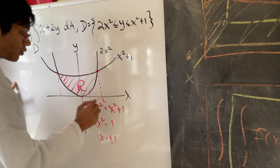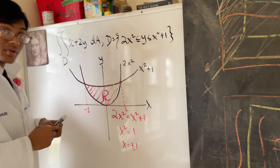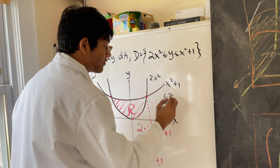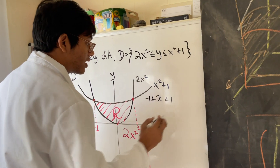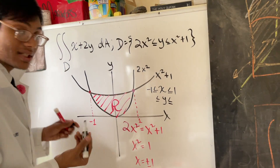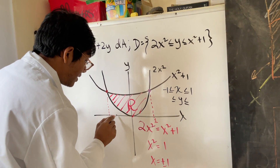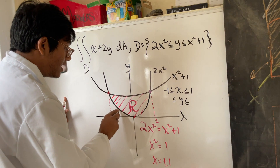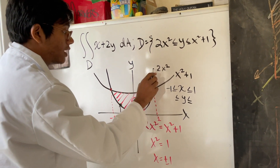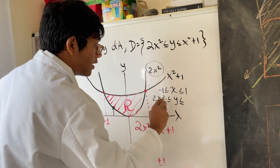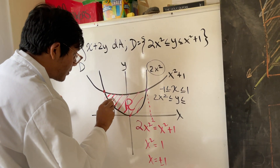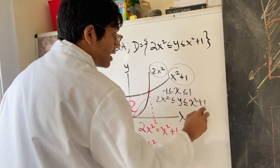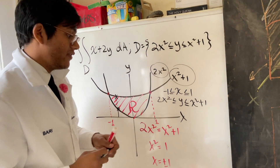Now we know the bounds for our x-coordinate: the limits of integration for x go from negative 1 to 1. For y, imagine an ant going upward — the first function it hits is the lower function 2x squared, and continuing upward it hits x squared plus 1. So the limits of integration for y are from 2x squared to x squared plus 1.